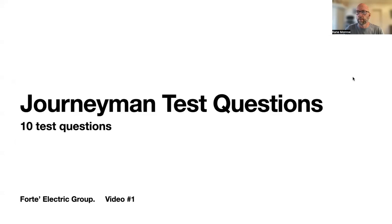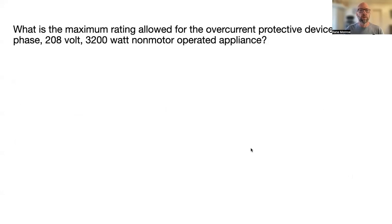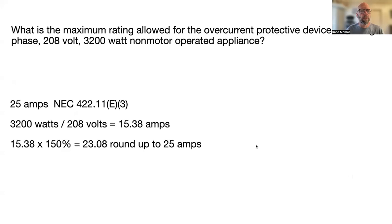We've got 10 questions — this is video number one. First question: what is the maximum rated overcurrent protection device rating allowed for a single-phase 208-volt 3200-watt non-motor-operated appliance? That's a lot of verbiage. The answer is 25 amps.